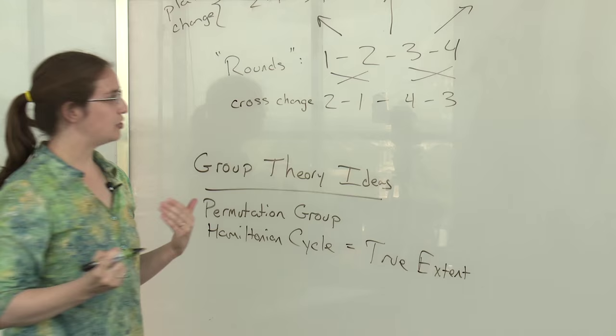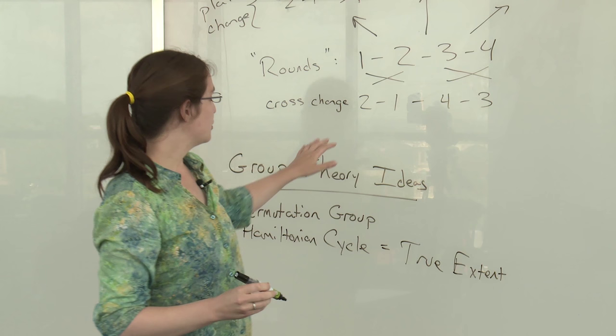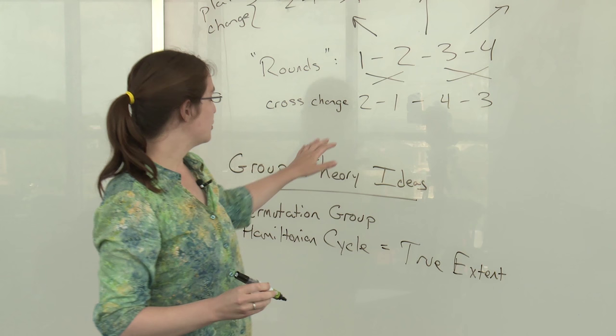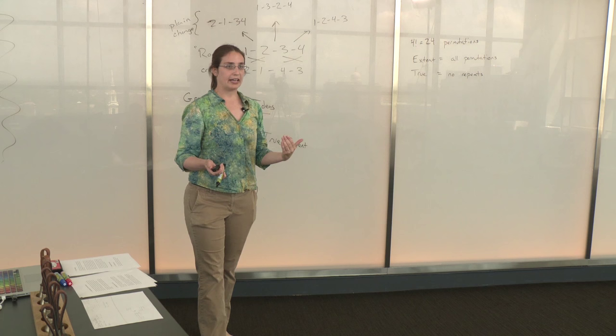And it basically allows us to go through the permutations in different orders and in different combinations. So if we do this cross change, you see we get two one four three. If we were to do another cross change, then we would just get right back where we started again. Again, our goal is to not have repeats, is to ring as many permutations as we can without repeating. So instead of doing another cross change, we'll put in a plain change. We'll do a change which is swapping the middle two bells.